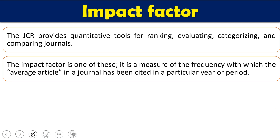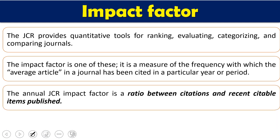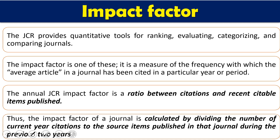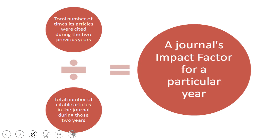Impact factor is a measure of the frequency with which the average article of a journal has been cited in a particular year or period. Every year, the JCR impact factor is a ratio between citations and recent citable items published. The impact factor of a journal is calculated by dividing the number of current-year citations — meaning citations from the previous two years — to the source items published in that journal during those previous two years. The formula is: total number of times articles were cited during the previous two years, divided by the total number of citable articles published in those two years.